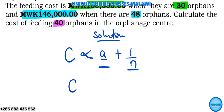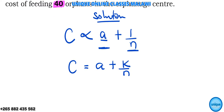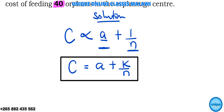When writing the equation, we write C equals A plus k over N, since one times k equals k. So the general equation is C = A + k/N. We are going to use this to find the values of A and k.